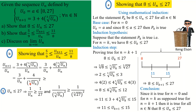We now substitute the lower bounds into our expression: 3/u_n + 4/(∛(u_n))² ≥ 3/27 + 4/9 = 1/9 + 4/9 = 5/9. So u_{n+1}/u_n ≥ 5/9, which proves the lower bound part.